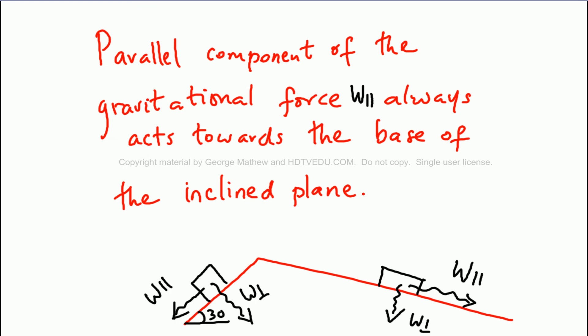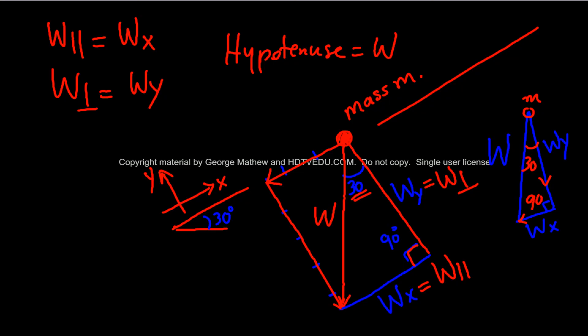The parallel component of the gravitational force, w parallel, always acts towards the base of the inclined plane. For mass M1 it is to the left; for mass M2 it is to the right. W parallel is wx, w perpendicular is wy, and the hypotenuse is w.